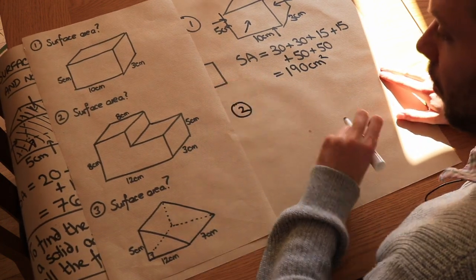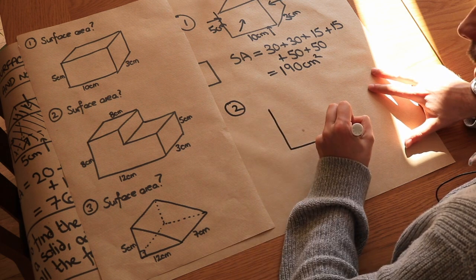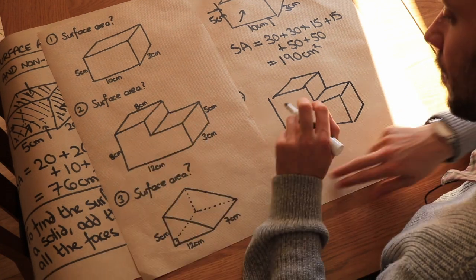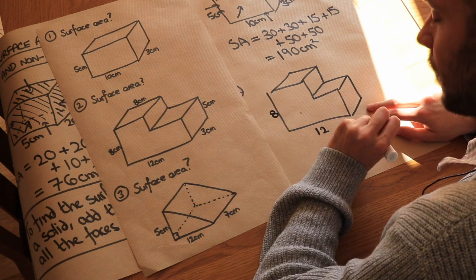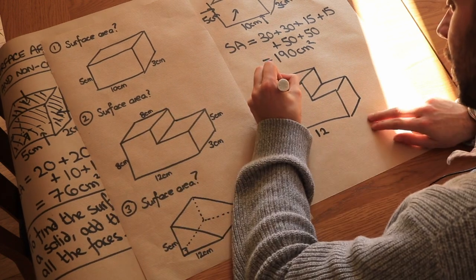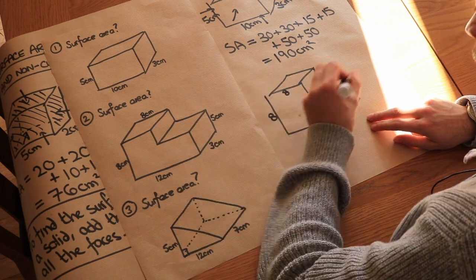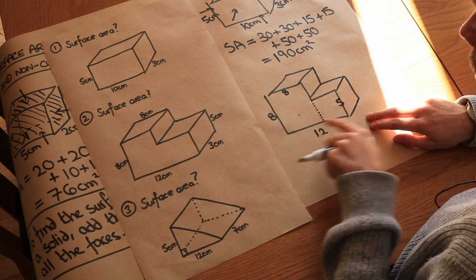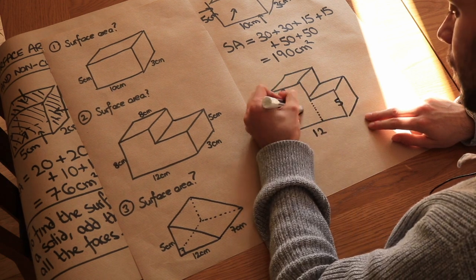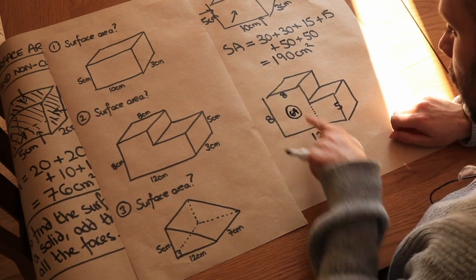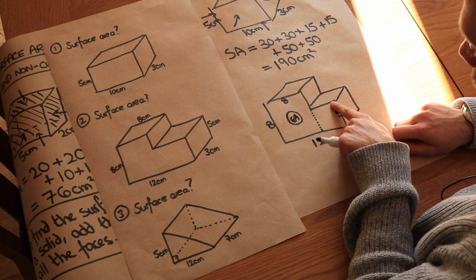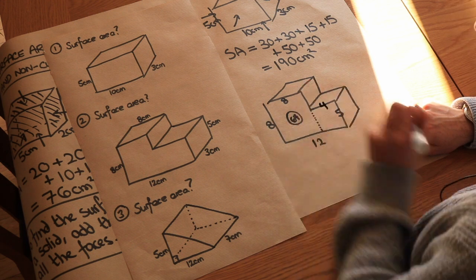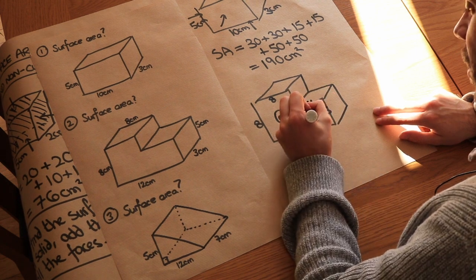The second shape is more complicated — an L-shaped rectilinear solid. First we find the area of the rectilinear face. We have dimensions 12 and 8, and by splitting the shape, one part has area 8 times 8 which is 64. The remaining length is 12 minus 8 equals 4, so the other part is 4 times 5, which is 20.